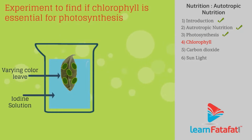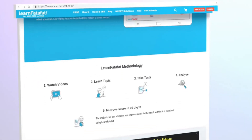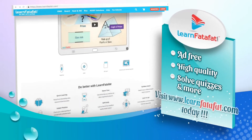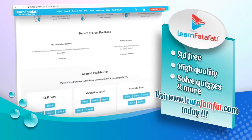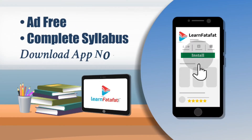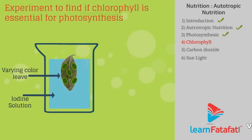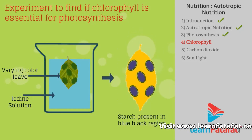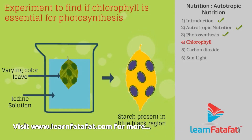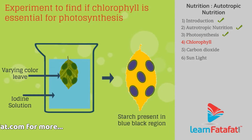Dip the leaf in a dilute solution of iodine, then remove and rinse the leaf. Because of starch produced in the photosynthesis process, some areas on the leaf become blue-black. This confirms that chlorophyll is essential for photosynthesis.